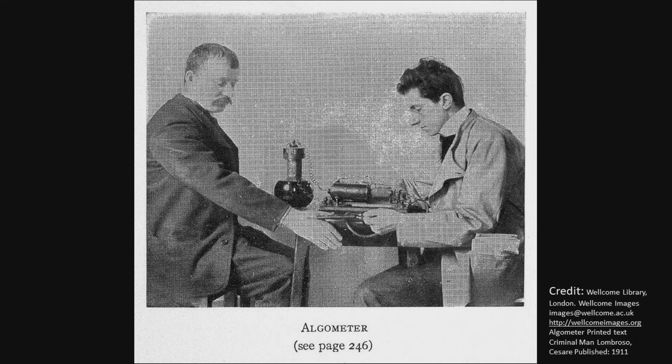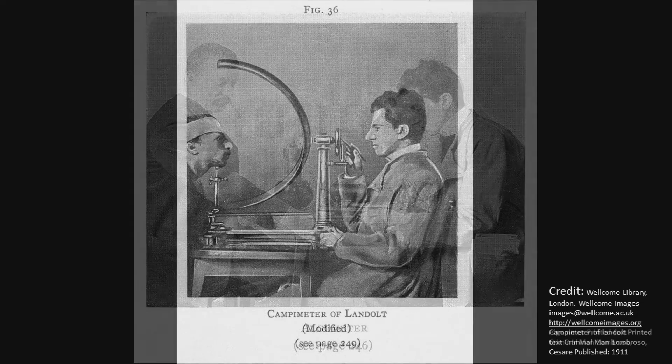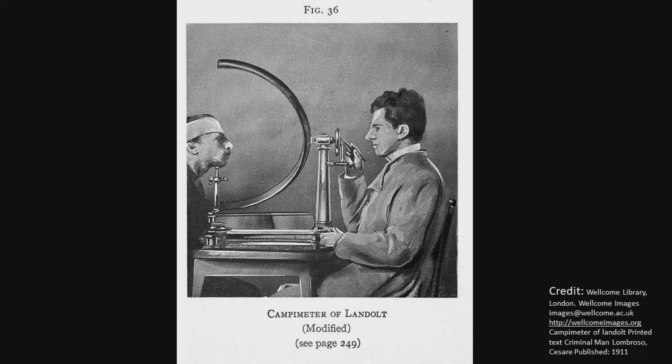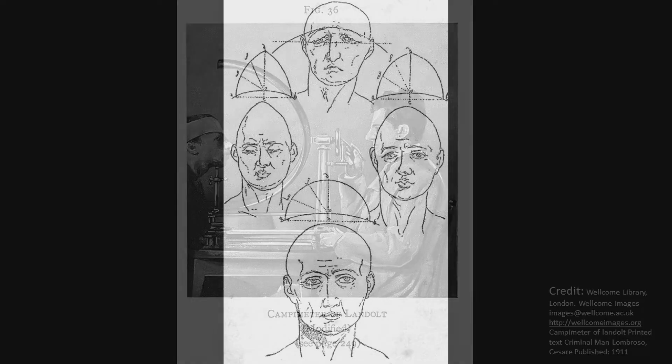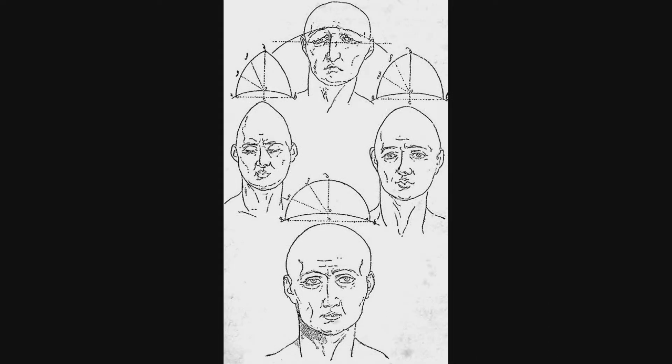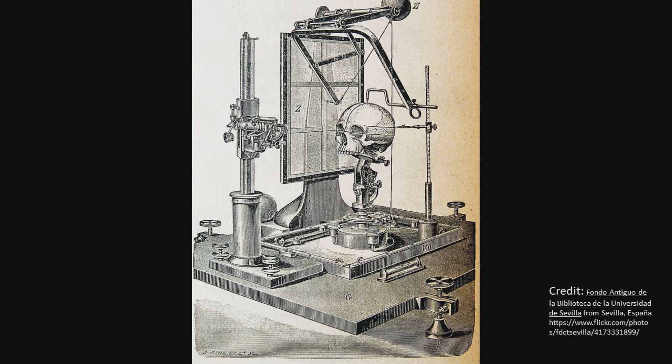Lombroso's ideas were based on his own research. One of the things that he is known for is that he conducted very detailed studies of people, and particularly studies of people's bodies. Different from many others who had gone before him, Lombroso started to directly study offenders and measure and document the characteristics of their bodies. Over the course of his life, he and his students studied thousands of people. They studied different types of people, namely offenders, non-offenders, and also mentally ill people. And they not only studied people who were alive, but they also did autopsies on deceased people, for example to study their skulls and their brains.